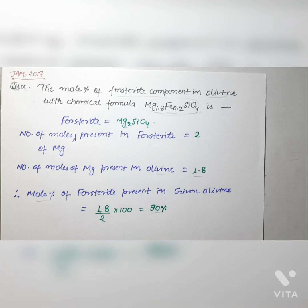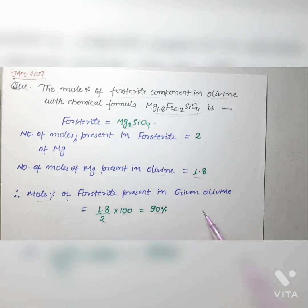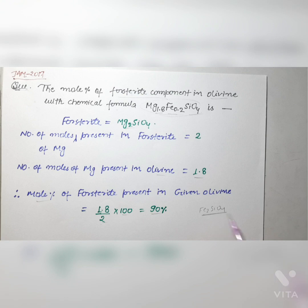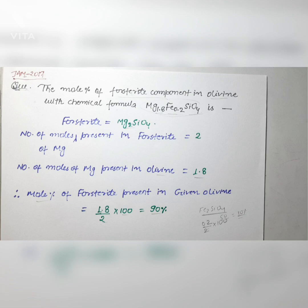If the question were asking about the mole percentage of the fayalite component in olivine, you would use the composition of fayalite, which is Fe₂SiO₄. The number of moles of iron in fayalite is 2 and in the olivine it is 0.2, so: (0.2 ÷ 2) × 100 = 10%.